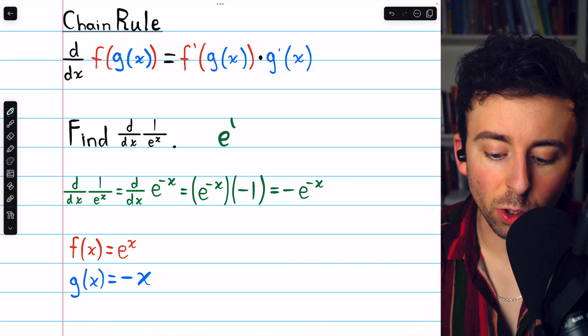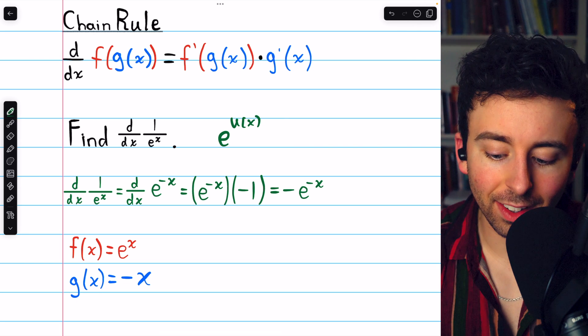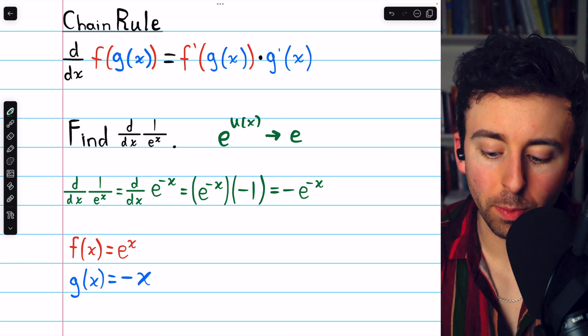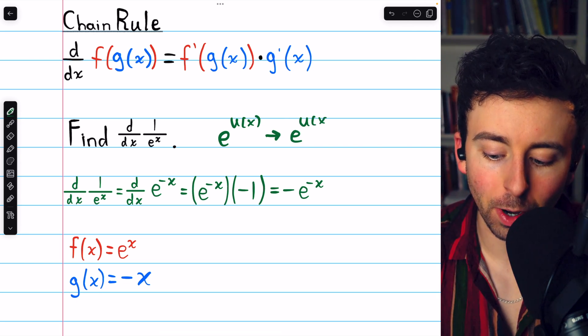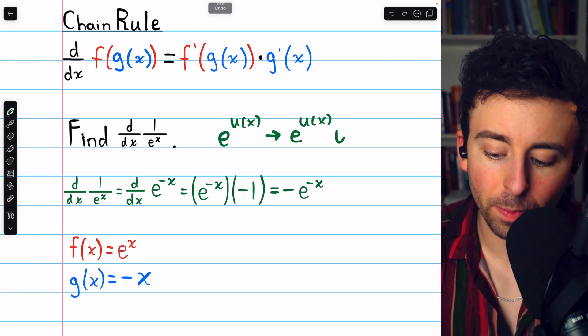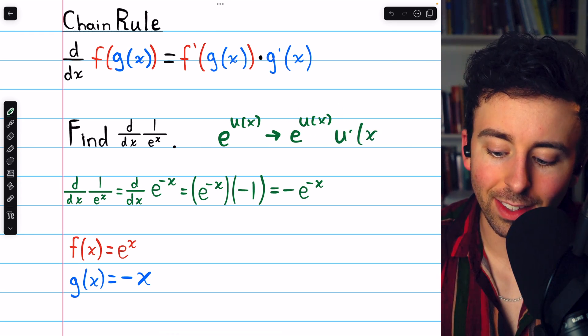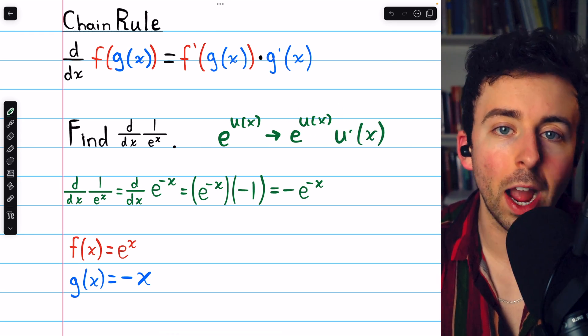In general, if you have e to some function u of x, its derivative is going to be e to the u of x, right? You're not going to change that inside function. But then you would just multiply by the inside function's derivative, u prime of x.